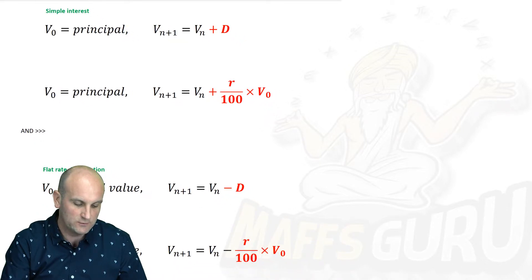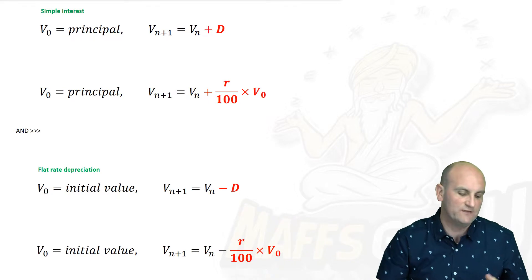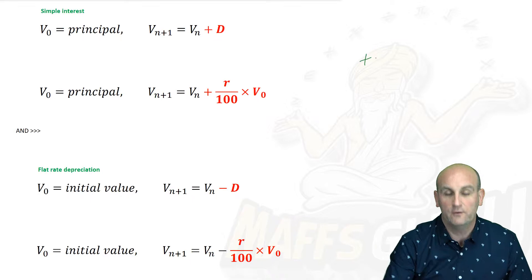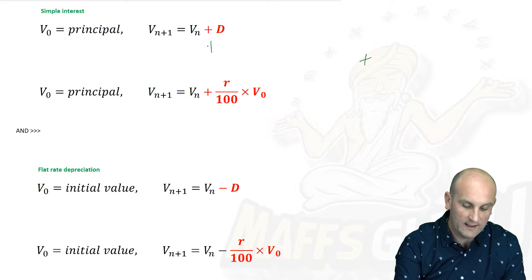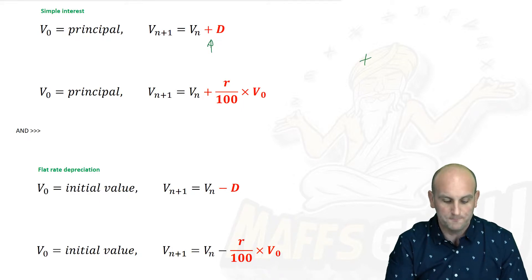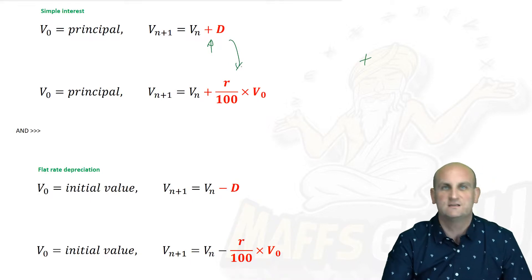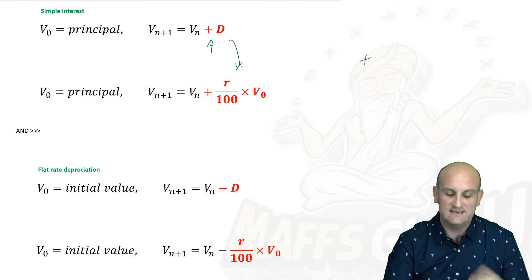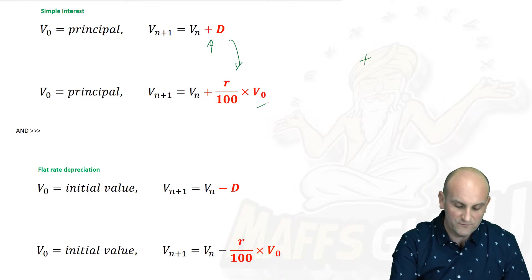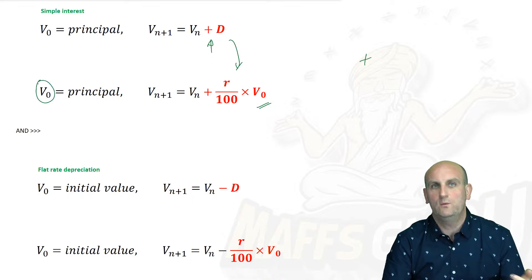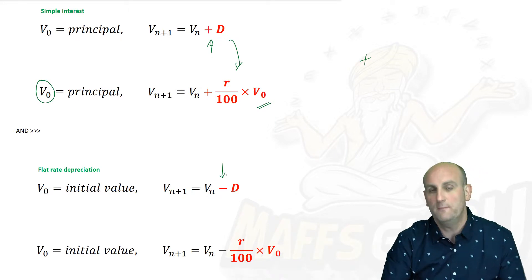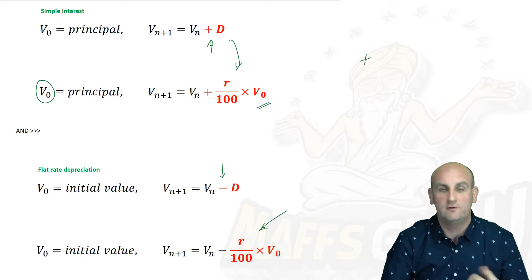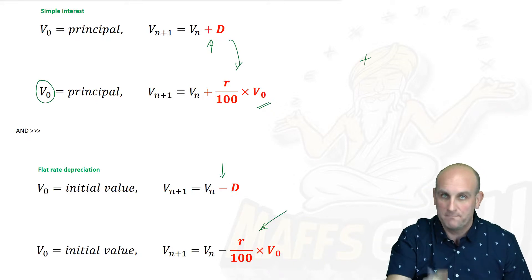So if we look here — I'm making my screen just a little bit smaller so it all fits on. We notice that simple interest was given by V0 as the principle. When we have interest, we're actually adding money on. And what we did was we decided that plus D allowed us to say that we were adding money on, getting more and more. D was calculated to be R over 100 times V0. When we were depreciating, because depreciation means going down, we changed the plus to a minus — exactly the same formula for D: R over 100 times V0. But this gave us linear growth or linear decay — going up or down by the same amount each month.